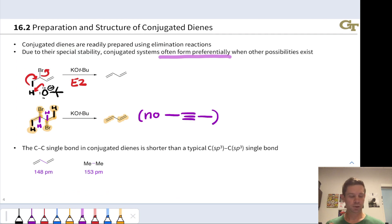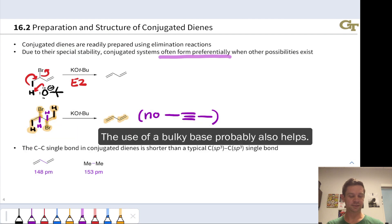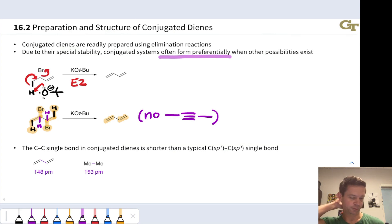And elimination of those would lead not to a conjugated diene, but to an alkyne. We could imagine eliminating, for example, this H and this bromine. That would establish a double bond here. Eliminating this H and this bromine would then establish the triple bond. But none of that is observed. And one of the reasons why is this conjugated system is relatively stable. So elimination occurs preferentially to give the 1,3-butadiene as opposed to the alkyne.